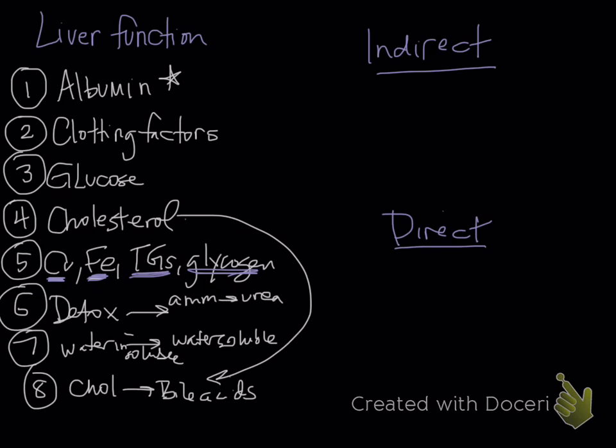Indirect tests are things like albumin and clotting factors. Indirect would be a low albumin, a low glucose, low cholesterol, an increase in PT and an increase in PTT, and of course a decrease in urea.